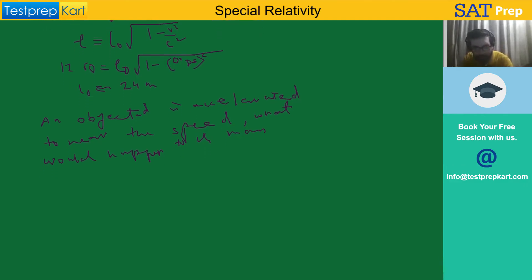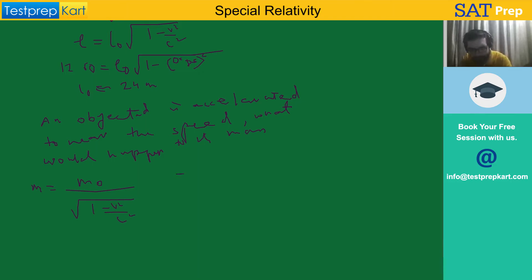It is nothing but M₀ divided by under root of 1 minus v squared by c squared. So from here we can see that the mass decreases — mass decreases.